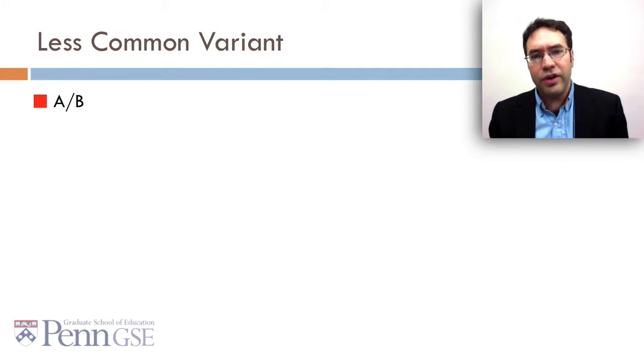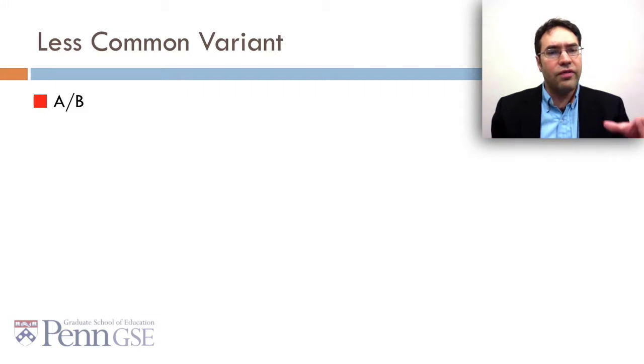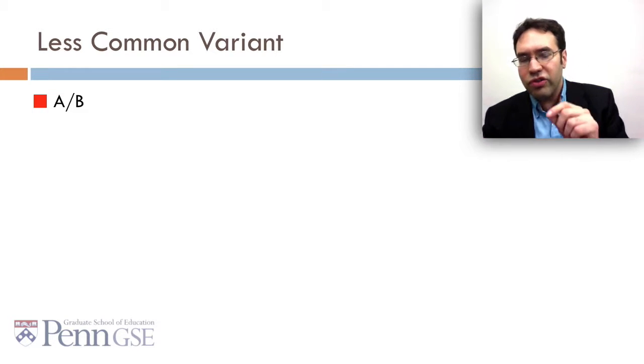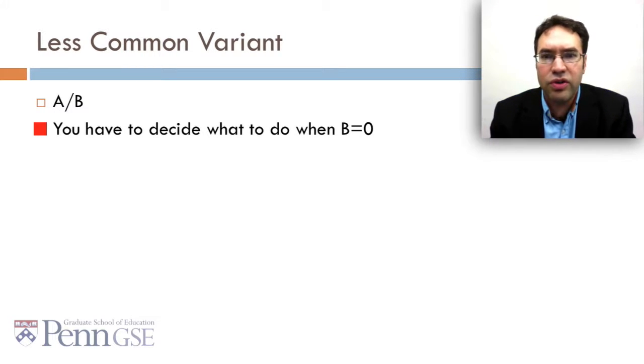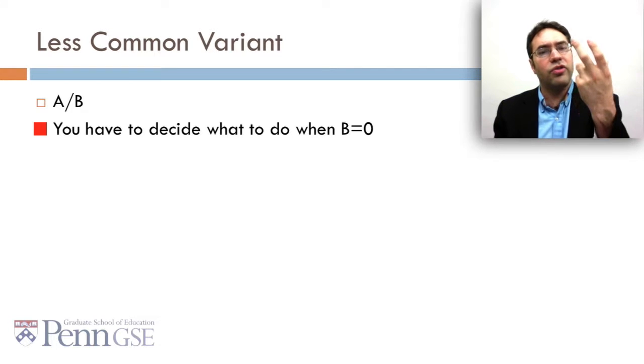A less common variant that you'll sometimes see is A divided by B, and you do that for all possible combinations. Of course, there's one challenge that you don't get with multiplicative, and that's that you have to decide what to do when B equals zero. Sometimes people will just treat it as missing, sometimes they'll just treat it as zero.